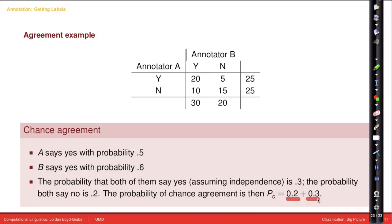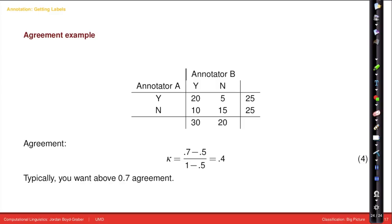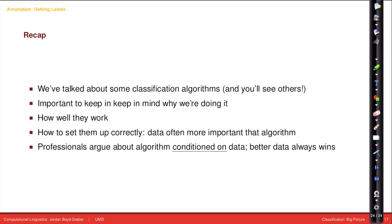So 0.2 for them saying no together, 0.3 for them saying yes together. Typically, you want to have around 0.7 agreement. This isn't a very good set of annotators here. Something is wrong, either with the definition or with the annotators in general.